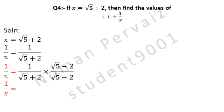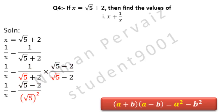1 over x is equal to — it comes as it is. 1 is multiplied with under root 5 minus 2. Here we are going to apply the formula: (a + b)(a − b) = a² − b². In our question, a is under root 5 and b is 2.